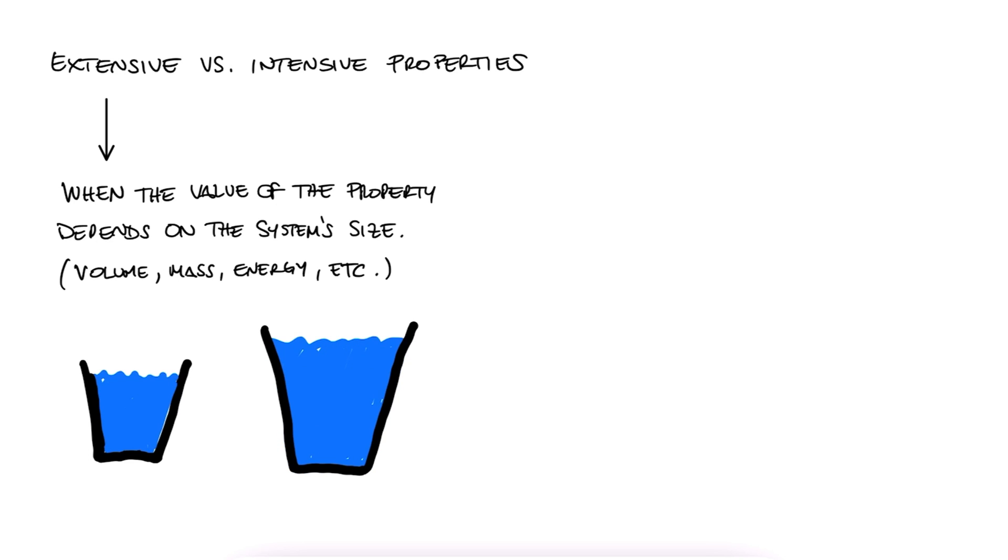We call them intensive when their value is independent of the system size, for example, temperature or density. Doubling our system size doesn't mean that the temperature is going to double too, right? Same with the density of whatever we have inside.